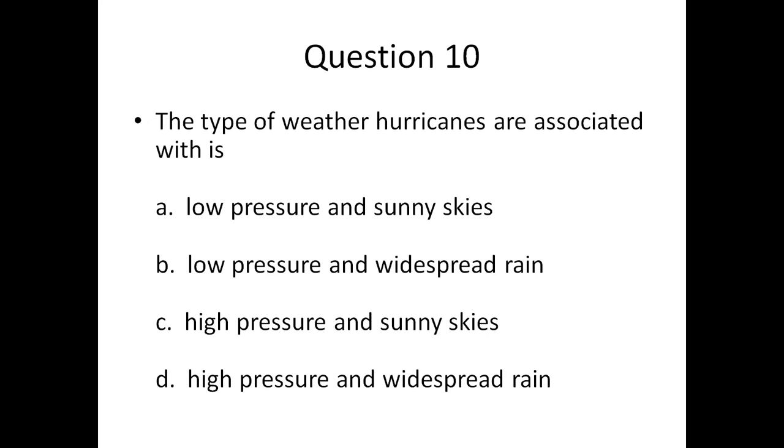And the final question, question 10: The type of weather hurricanes are associated with is: A: Low pressure and sunny skies, B: Low pressure and widespread rain, C: High pressure and sunny skies, or D: High pressure and widespread rain.